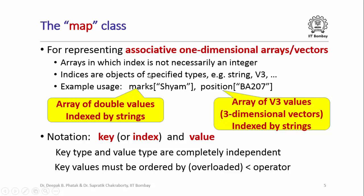The notation we are going to use when discussing associative arrays is that we refer to the index also as a key, and when I index the array by the key I get a value. For example, 'sham' is the index and marks indexed by 'sham' would be the value. Similarly, 'BA207' is the index and the position indexed by 'BA207', which is an object of class V3, would be the value. In an associative array, the type of the key and the type of the value are completely independent.